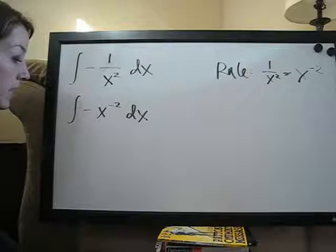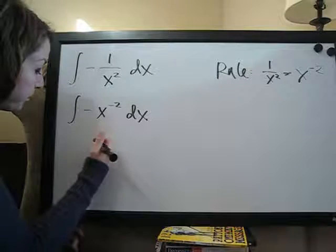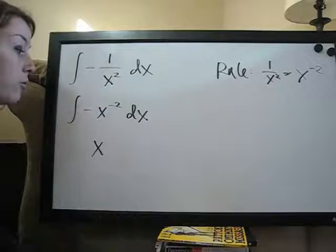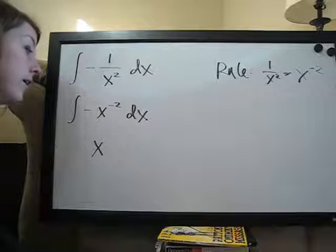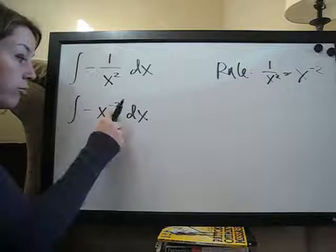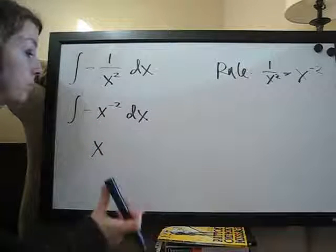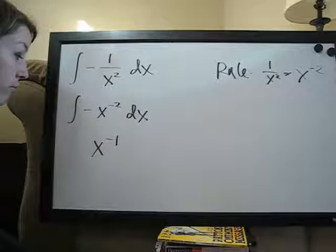And the way that we're going to take the integral is the same way that we always take an integral. So, write the x down here, and then of course add 1 to the exponent. So this is a negative exponent. So, adding 1, this wouldn't be negative 3, it would of course be negative 1. Negative 2 plus 1 is negative 1. So the exponent here is negative 1.